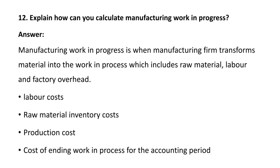Next question: explain how you can calculate manufacturing work in progress. Manufacturing work in progress is when the manufacturing firm transfers material into the work-in-process, which includes raw material, labor, and factory overhead. It also includes labor cost, raw material inventory cost, production cost, and cost of ending work in process for the accounting period.